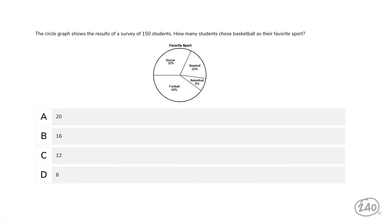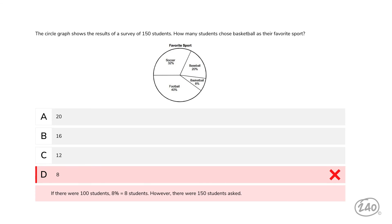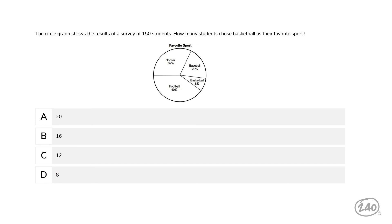Finally, statistics and probability. The circle graph shows the results of a survey of 150 students. How many students chose basketball as their favorite sport? This problem gives us survey data, a pie chart, and asks how many students chose basketball. There's an 8% wedge for basketball — but since 150 students were asked, the percentage doesn't equal the number of students. Instead, we need to multiply the percentage by the total: 8% times 150. For the first 100 students, 8% equals 8 students. For the remaining 50, it'd be half, so another 4 students, giving us 12 total.